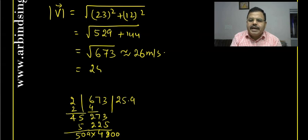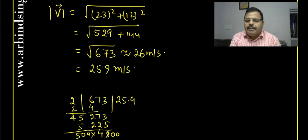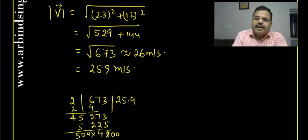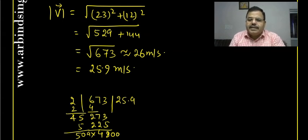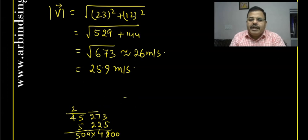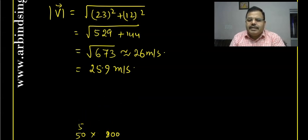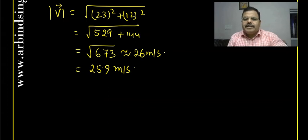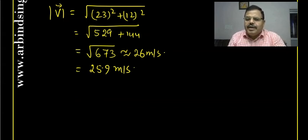The magnitude of velocity comes out to approximately 25.9 m/s, which you can write as approximately 26 m/s. If you want the exact value, calculate √673 ≈ 25.96 meters per second.